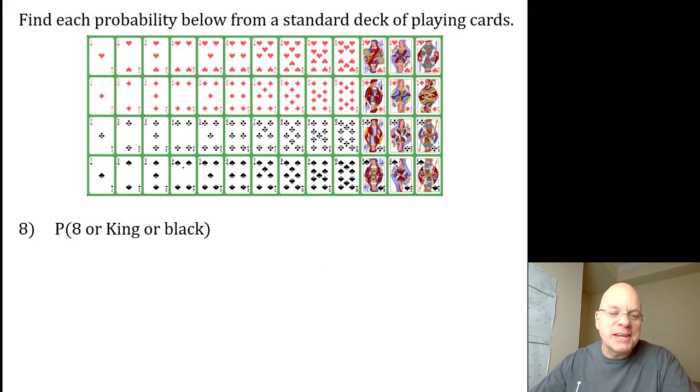Number eight, the probability of an eight or a king or a black card. All right, probability of an eight, there's four eights, four fifty-seconds.